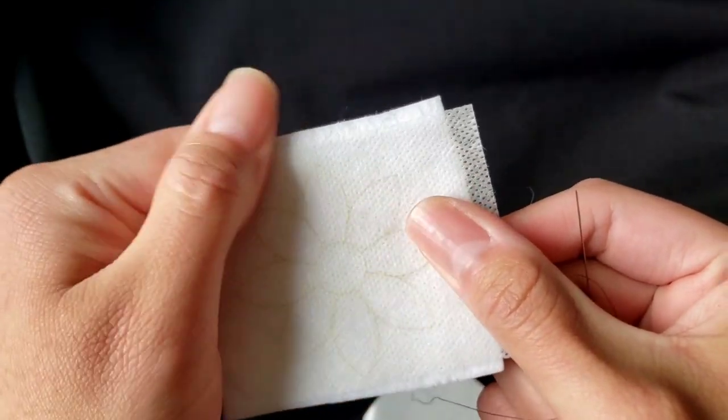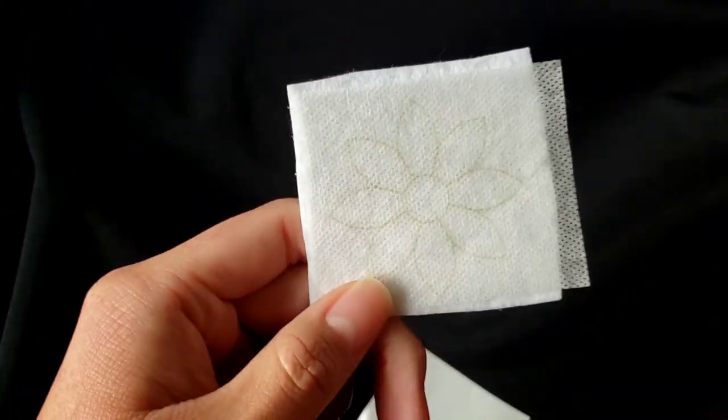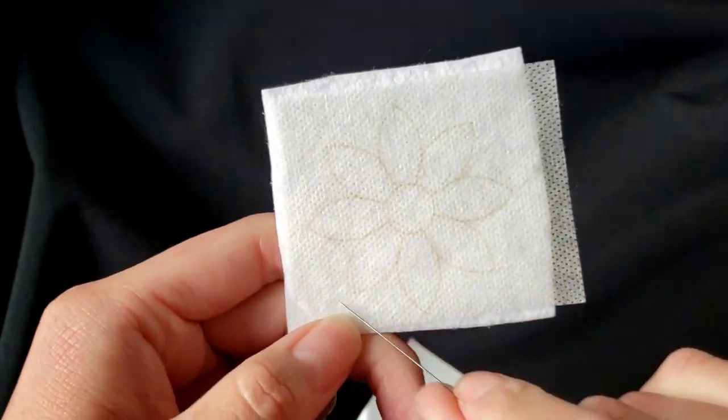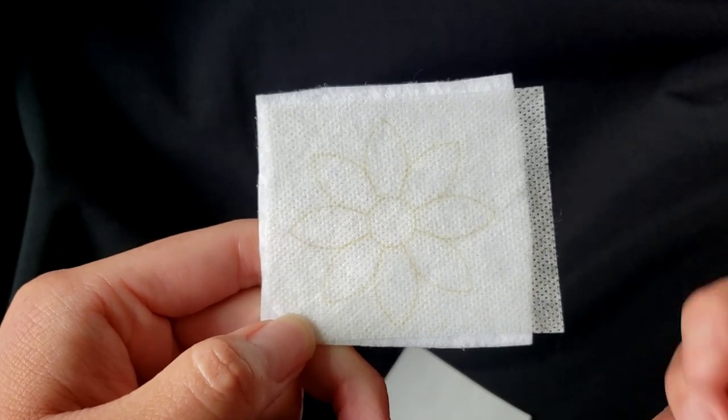Then when it's all smoothed out, I'll bead around the edges, or I'll tack around the edges, just so it won't come up when I'm beading.